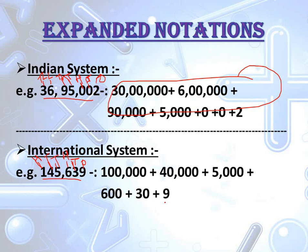The same trick applies in the international system: write 1, five digits left, write 5 zeros, put comma per international system, then plus. Next digit 4, four digits left, write 4 zeros, put comma, then plus. Write 5, three digits left, write 3 zeros, put comma, then plus. Write 6, two digits left, write 2 zeros. Write 3, one digit left, write 1 zero. Then plus 9. If you add all of these, you get the same number. In expanded form, keep in mind that we write the place value of each particular digit and separate the digits by writing their place values.